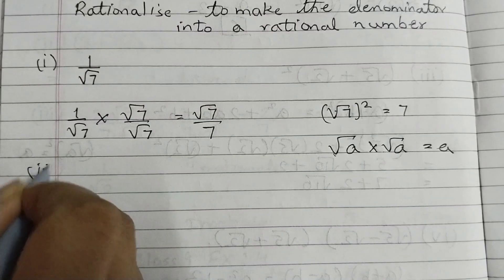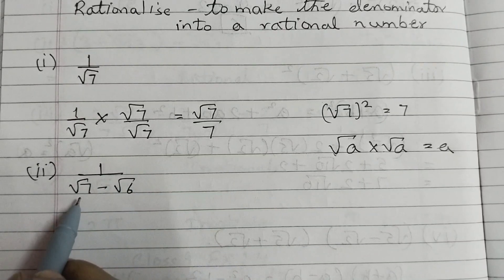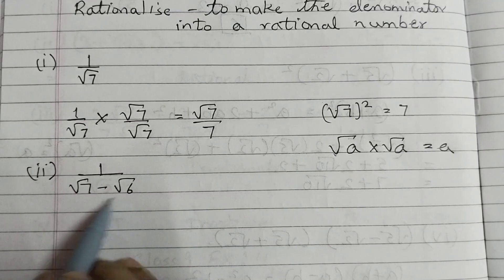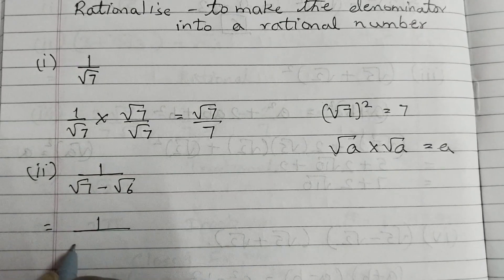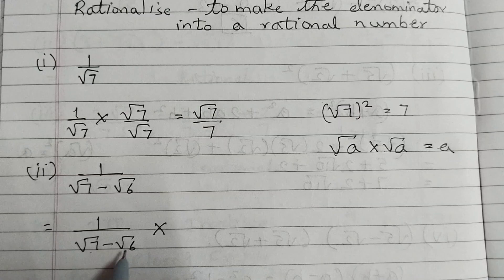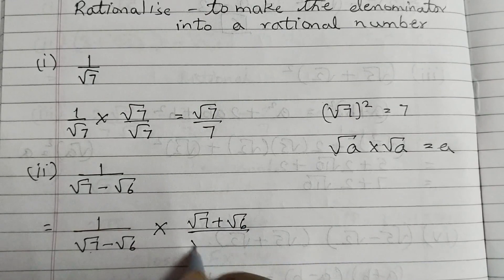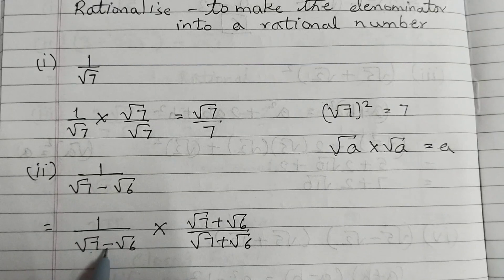The second one is 1 over root 7 minus root 6. Here we have two terms in the denominator, so we need to multiply by the conjugate. Conjugate means we take the same expression but change the sign. So the conjugate of root 7 minus root 6 is root 7 plus root 6.